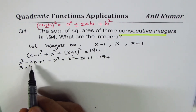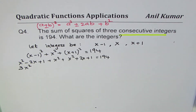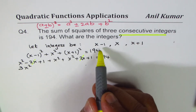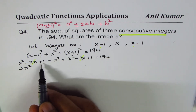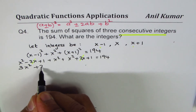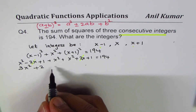Now combine like terms. We have three x squared terms, giving 3x squared. The minus 2x and plus 2x cancel out — that is exactly why I chose x minus 1, x, and x plus 1. The constants 1 plus 1 give plus 2, so we write 3x squared plus 2 equals 194.